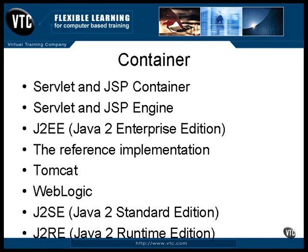The J2RE is the Java Runtime Edition. The container must have access to this because it's where all the runtime classes are contained. You probably will not need to download this separately because it always comes as part of the J2SE. You only need to download the J2RE when you're setting up a computer with a runtime-only environment — so if you're going to be using a separate server that is never used for software development, you may need to install only the server, the container, and the J2RE.